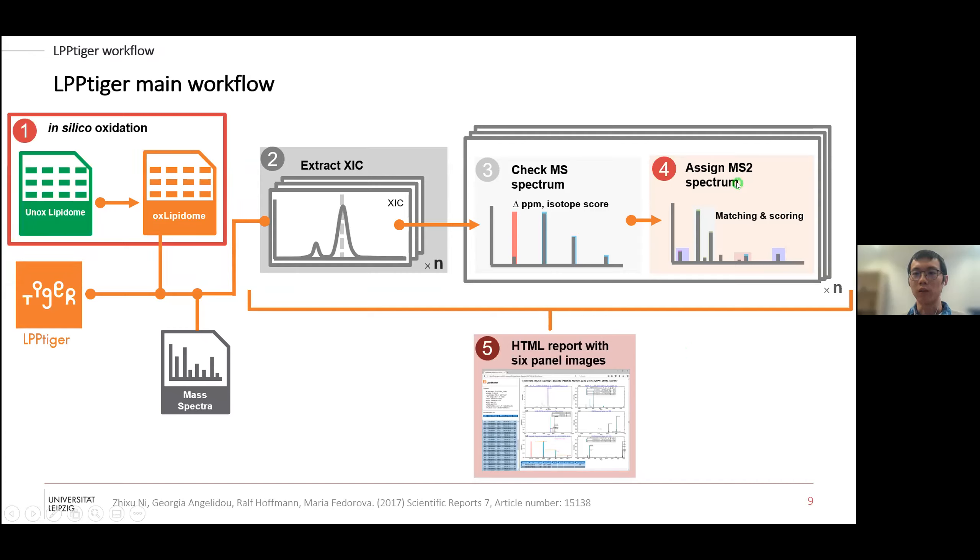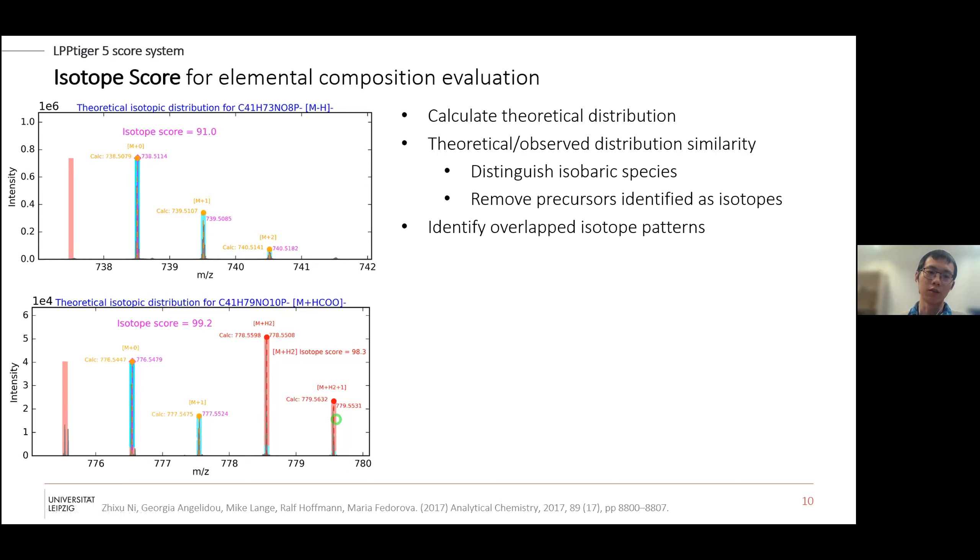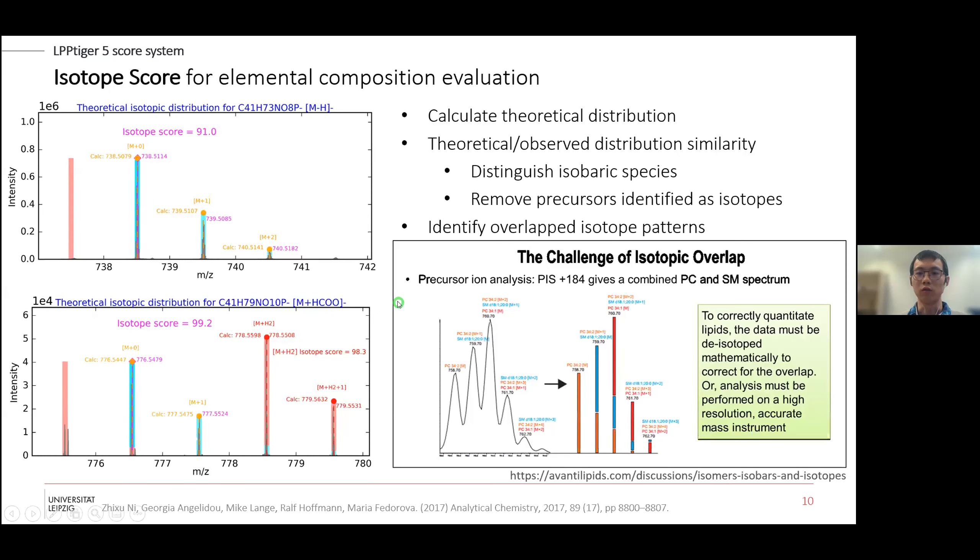For the assignment we have our special five-score system. The first score is the isotope score, which is very important to see if it's actually the exact elemental composition. This is a simple example - very common case for lipids - that you have two more hydrogens, that means one less saturation, then you have overlaps of the isotope pattern. So LPP Tiger is able to do that. We also have to be aware that there are other possibilities, for example sphingomyelins are overlapped with phosphatidylcholines, also with this complex isotope pattern. Based on this isotope score we can clearly say the elemental composition of the precursor.